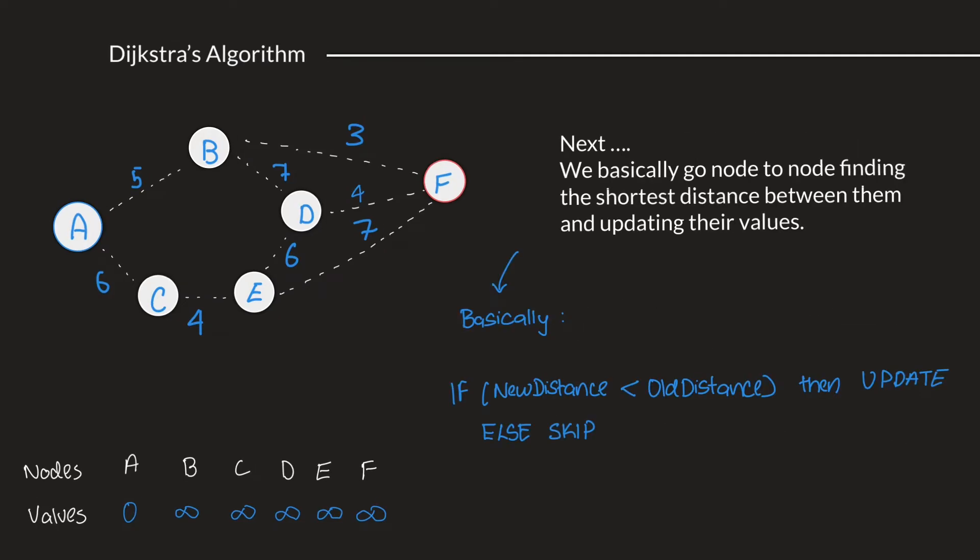Our next step would be basically going node to node, finding the shortest distance between them, and updating their values constantly. A simple logical explanation of this is, if the new distance is less than the old distance, then update that value, or else skip on updating it, and just keep moving ahead.